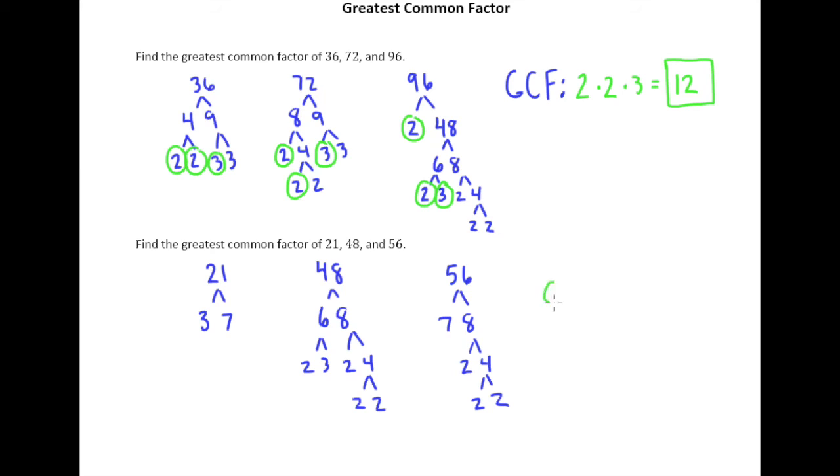And so when that happens, we saw this in the last video, our greatest common factor is just 1. As we always know, at least 1 will be able to divide into each number.